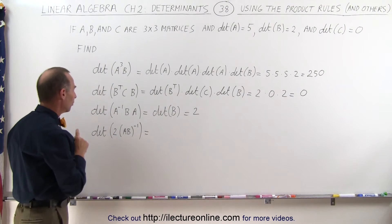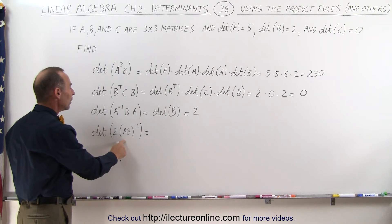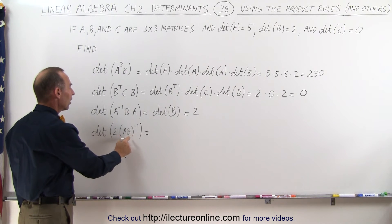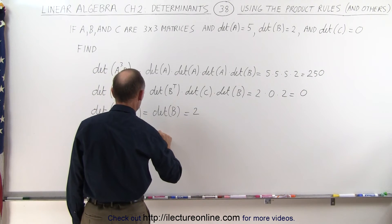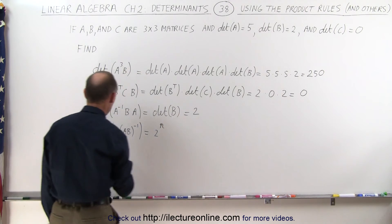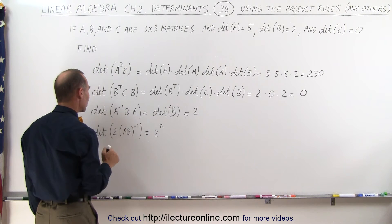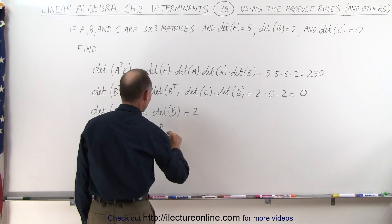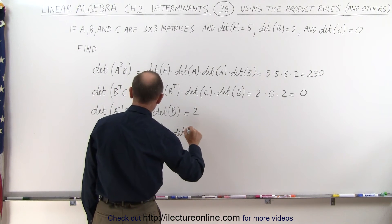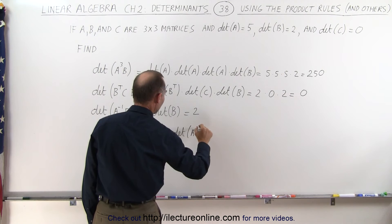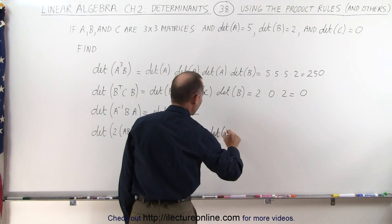And finally this one. We're multiplying times a constant, and then we have the inverse of A times the inverse of B. This can be simplified as saying this is equal to 2 to the n power. Remember in this case, it's a 3 by 3 matrix, so n will be a 3, times the determinant of A inverse times the determinant of B inverse.